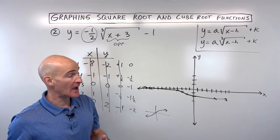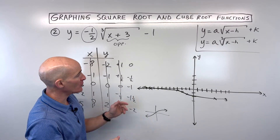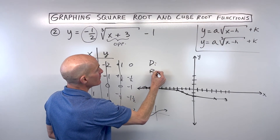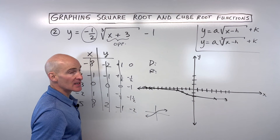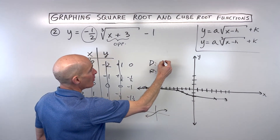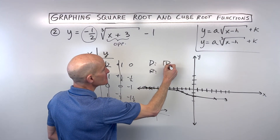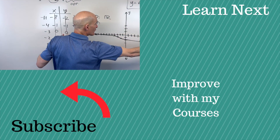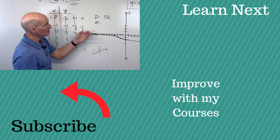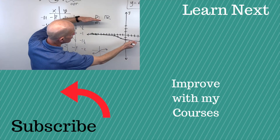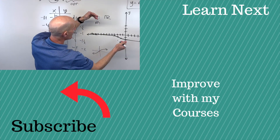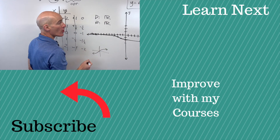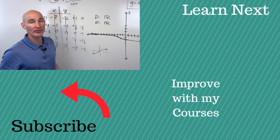For cube root functions, the domain is always all real numbers because the graph goes left and right forever. The range is also all real numbers because the graph gradually goes up and down forever.